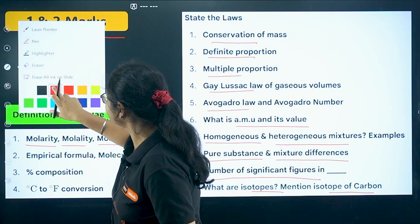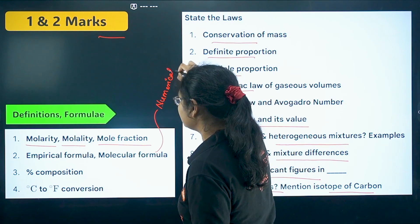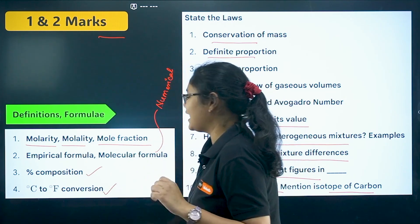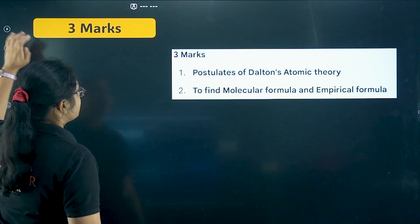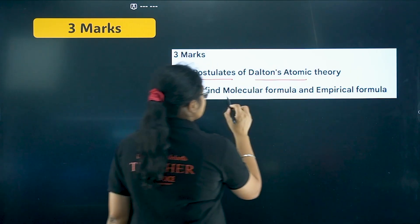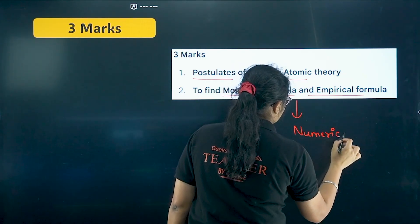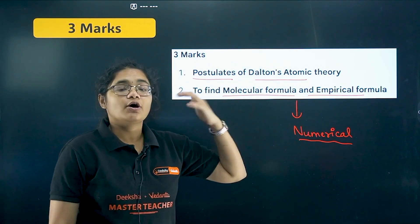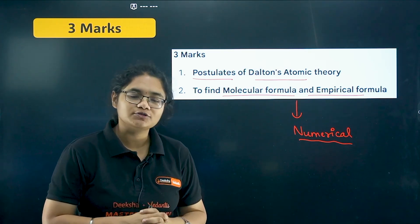For empirical formula and molecular formula, numerical questions can be asked, so definitely you need to practice numericals from here. Then percentage composition and conversion of centigrade to Fahrenheit — these are some important questions in one and two marker. Now moving to three marker questions: postulates of Dalton's atomic theory is a very important question, and finding molecular and empirical formula is a must-practice numerical — easy to solve. If you want a separate video on numerical questions only, you can comment below and I'll make that video.